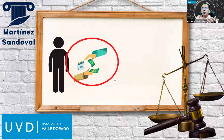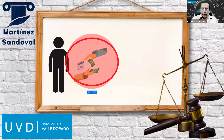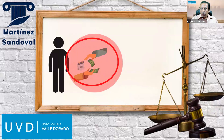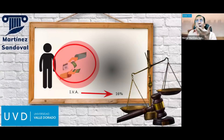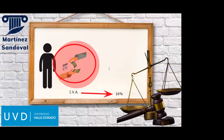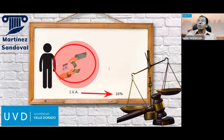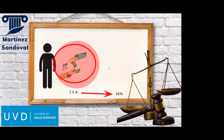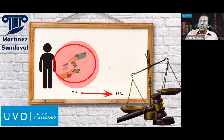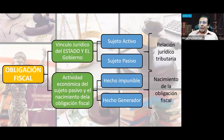Por ejemplo, si se realiza una transacción de un producto o servicio, de conformidad con la Ley del Impuesto al Valor Agregado, se tiene que pagar una tasa del 16% al materializarse el hecho previsto en la norma. El hecho generador ocurre cuando los elementos que establece la hipótesis se materializan, generando el crédito tributario y el vínculo del Estado como fisco con el contribuyente como sujeto pasivo.